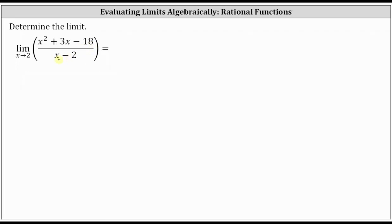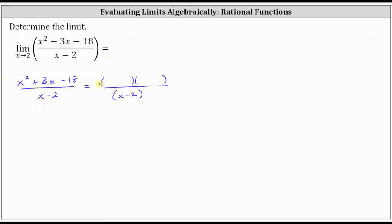Let's begin by determining if x minus two is also a factor in the numerator. If the numerator does factor, it will factor into two binomial factors. The factors of x squared are x and x. The factors of negative 18 that add to positive three are positive six and negative three. We'll notice how x minus two is not a common factor between the numerator and denominator, and therefore we have a vertical asymptote at x equals two.